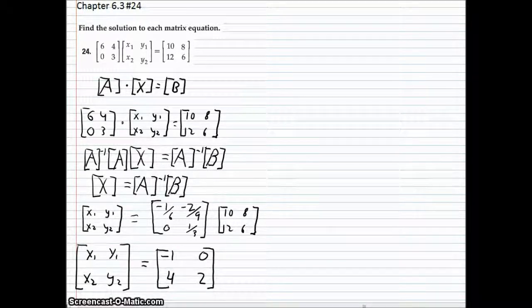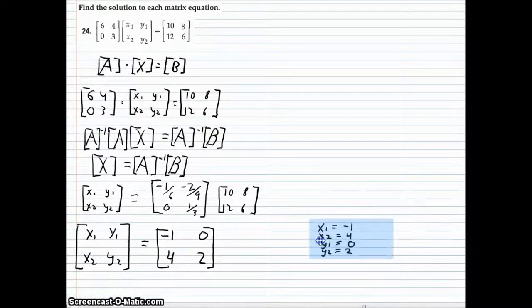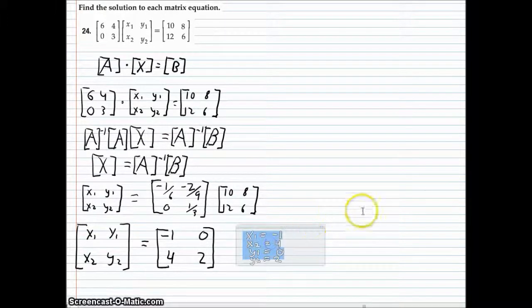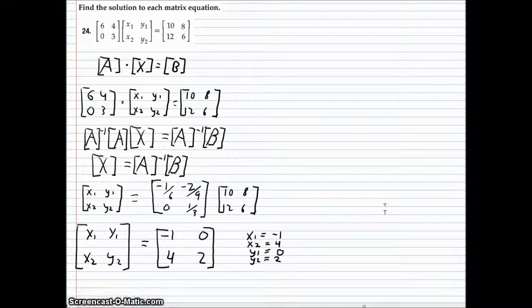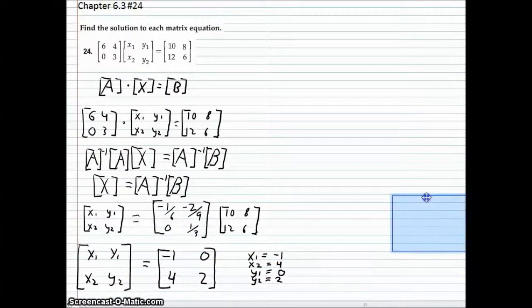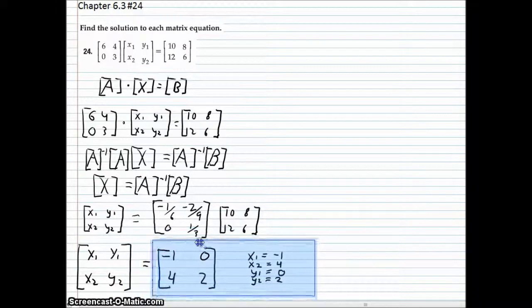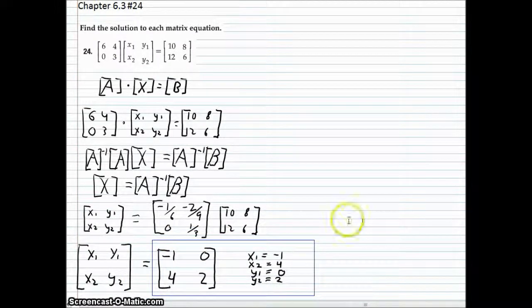Or, if you're being asked to solve for each individual variable, this would be your answer. Still, X1 equaling negative 1, X2 equaling 4, Y1 equaling 0, and Y2 equaling 2. Just depending on whether or not they wanted you to find a matrix or individual variables. So, these would be the answer to your problem, depending on what form they wanted the answer in.